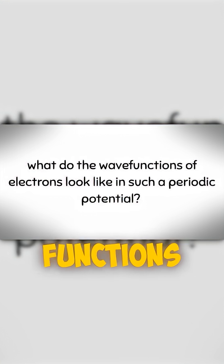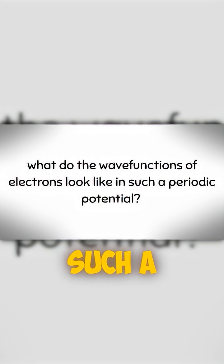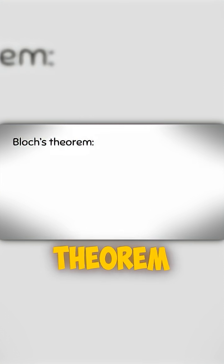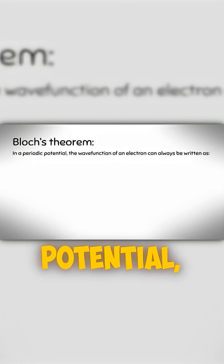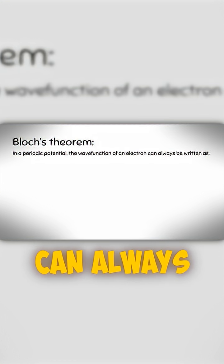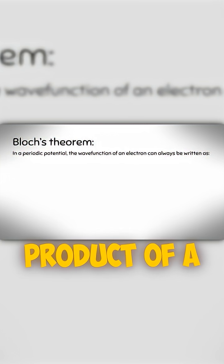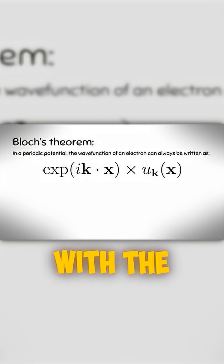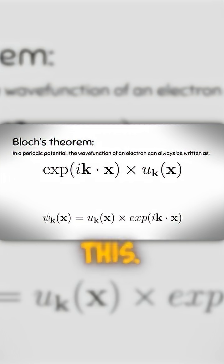The question is what do the wave functions of electrons look like in such a periodic potential? Bloch's theorem states that in a periodic potential, the wave function of an electron can always be written as the product of a plane wave and a function with the same periodicity as the lattice. So the full wave function is this.